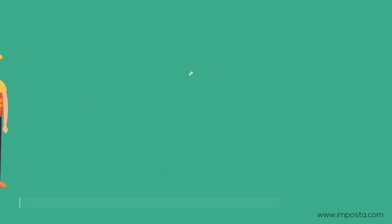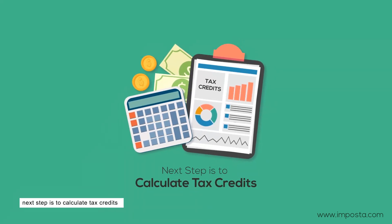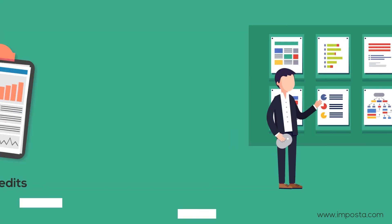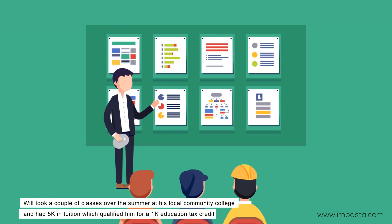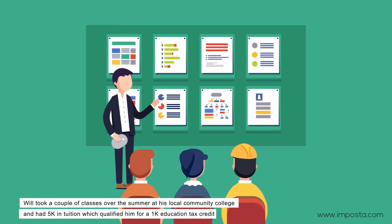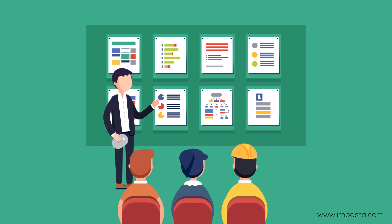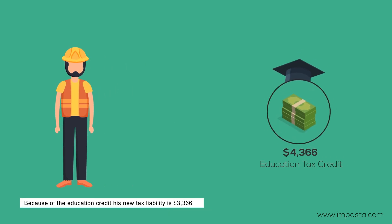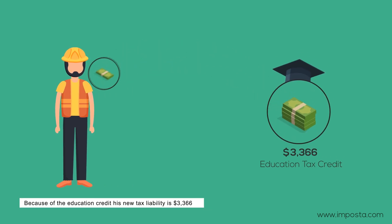The next step is to calculate tax credits. Will took a couple of classes over the summer at his local community college and had $5k in tuition, which qualified him for a $1k education tax credit. Because of the education credit, his new tax liability is $3,366.